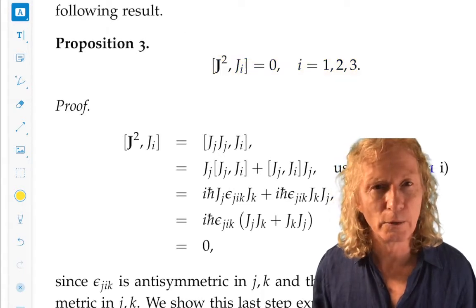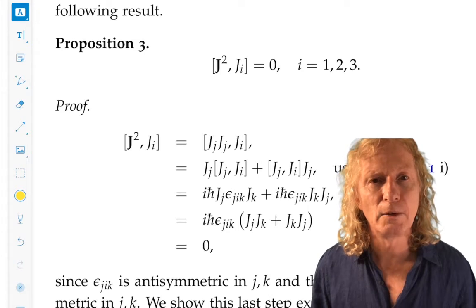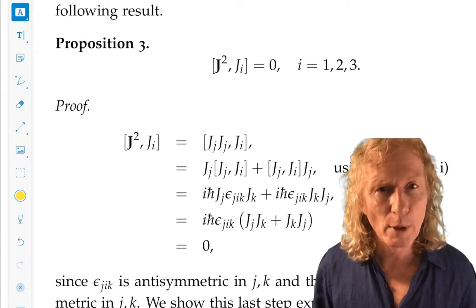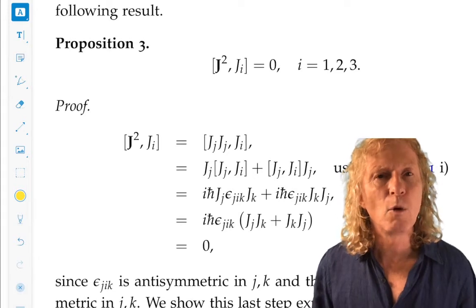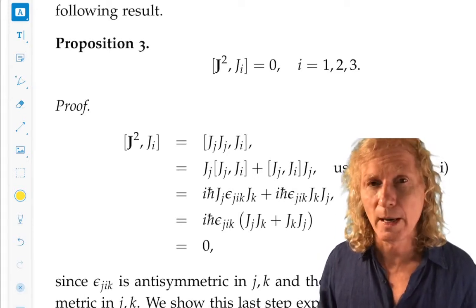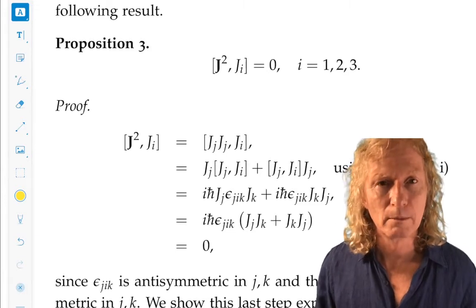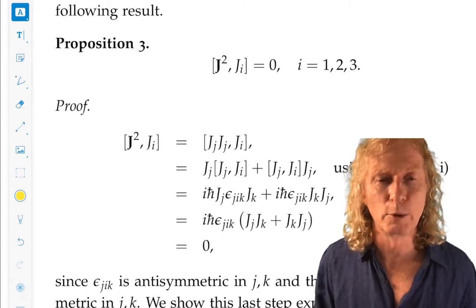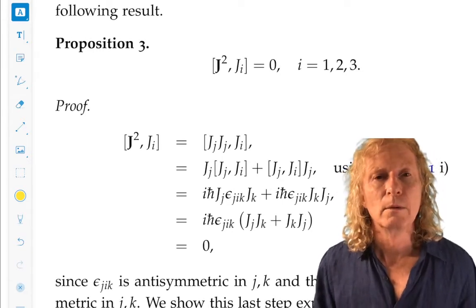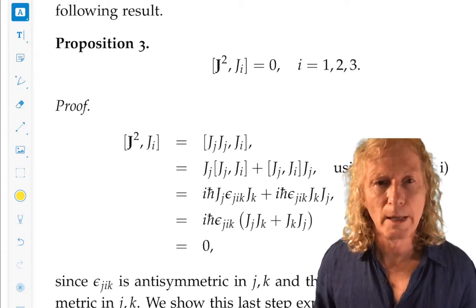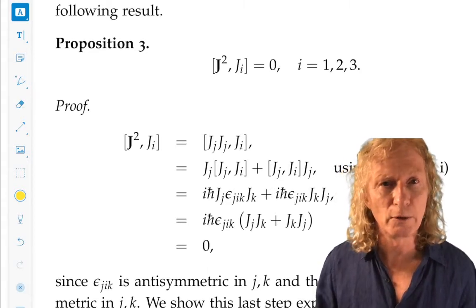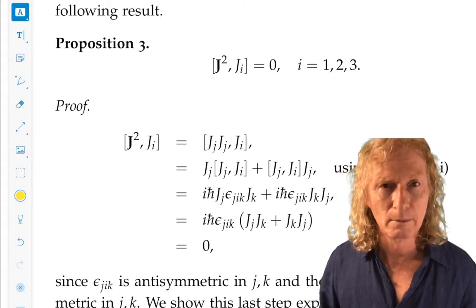It follows that we can find a set of eigenvectors that are eigenvectors for both J² and any one component of J. And we're going to take that to be J3 as a result of tradition, mostly. So we can find a common set, a set of simultaneous eigenvectors for J² and J3.